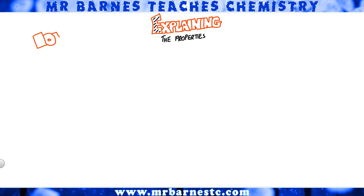In the exam, they won't tell you that you've got ionic bonding or metallic bonding. They will give you the name of a chemical, most likely, and ask you to explain why it has a high melting point, why it doesn't conduct, why it does conduct, and so on. So you've got to be able to work out what type of bonding is going on, to then work out the properties, to then be able to explain it.